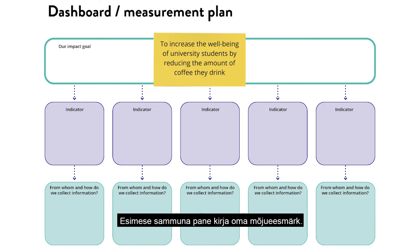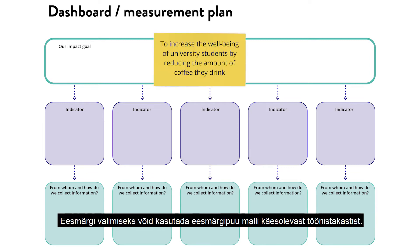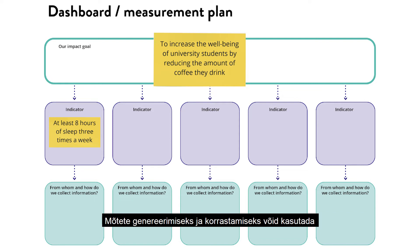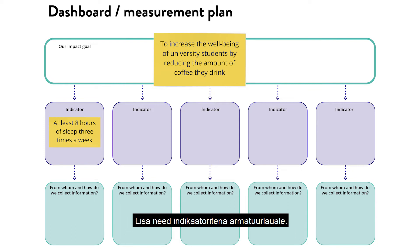As a first step, write down your impact goal. You can use the goal tree template in this toolbox to choose the goal. Then think of which aspects about this goal you can and want to measure. You can use the indicators list tool in this toolbox to generate ideas and categorize them. Add them to the dashboard as indicators.